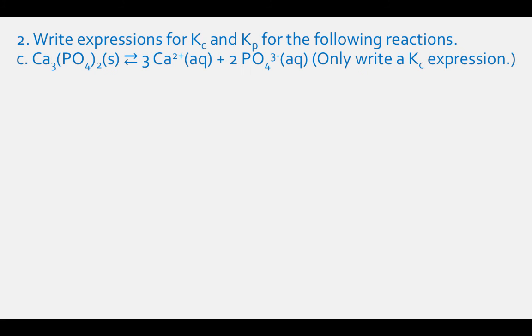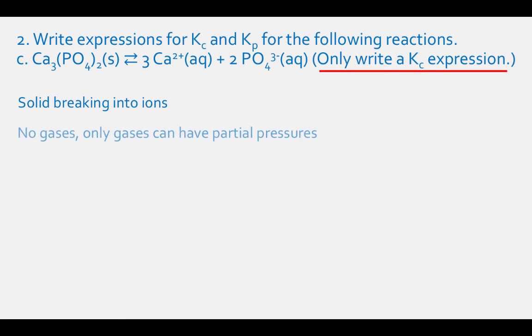For reaction (c), Ca3(PO4)2 solid in equilibrium with 3 Ca²⁺ aqueous plus 2 PO4³⁻ aqueous, we have a solid breaking down into two aqueous ions, and we are told to only write the Kc expression. This is because there are no gases in this reaction and only gases can have partial pressures. The Kc expression is the concentration of Ca²⁺ cubed times the concentration of PO4³⁻ squared.